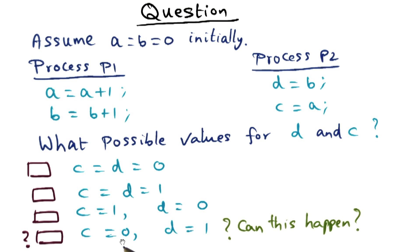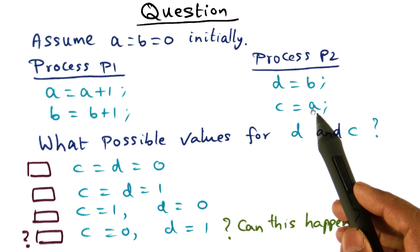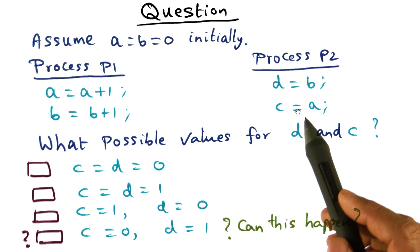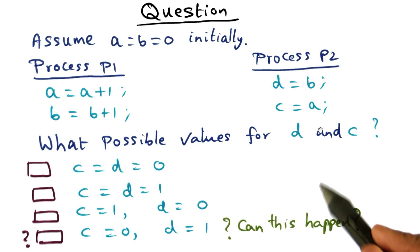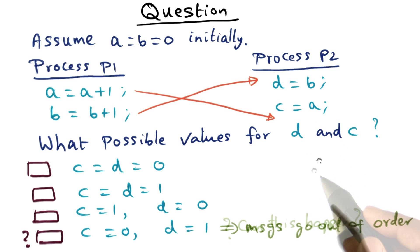But yet, we are saying when this process completes, C has a value of 0. What does that mean? It means that the new value of A hasn't come into the process of P2. How can this happen? It can happen if messages go out of order.